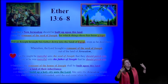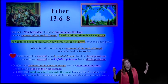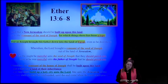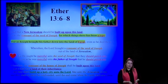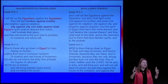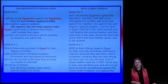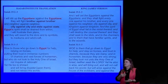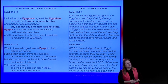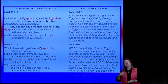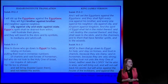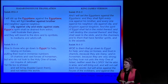One of the most profound pieces of information in the restoration is that there are two scenarios going on: a scenario in America on the land of the New Jerusalem, and a scenario in old Jerusalem where they will also build, according to Ether 13.